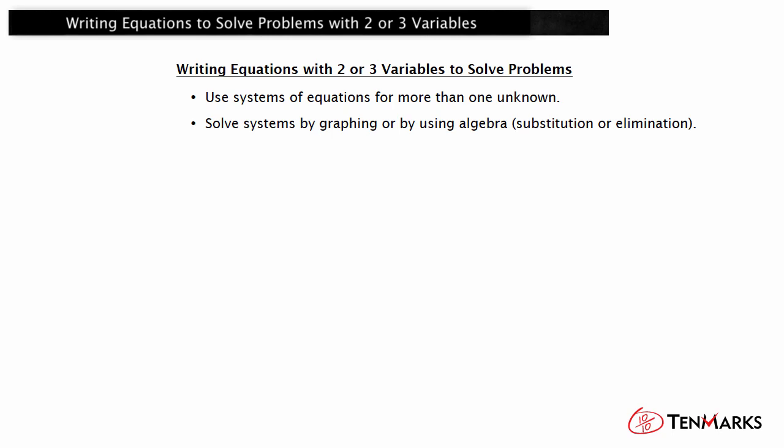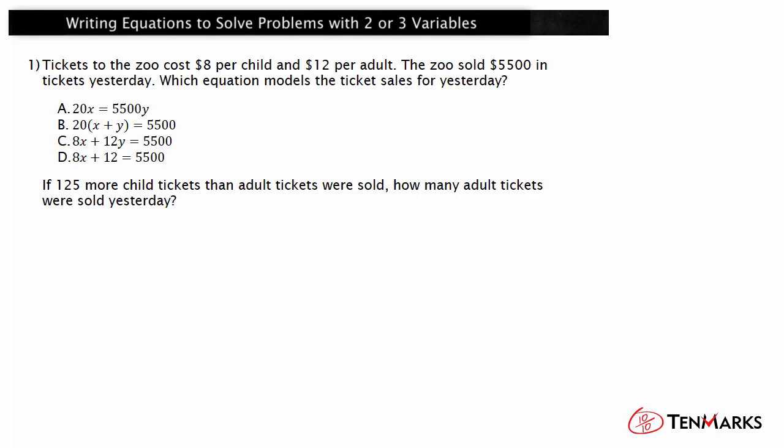Let's look at an example problem with more than one unknown. Tickets to the zoo cost $8 per child and $12 per adult. The zoo sold $5,500 in tickets yesterday. Which equation models the ticket sales for yesterday? What are the unknowns in this problem? In order to calculate the total ticket sales, you would need to know how many child and adult tickets were sold. So the unknowns are the number of child tickets sold and the number of adult tickets sold. These are what the variables will represent.